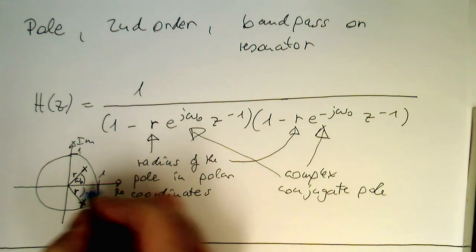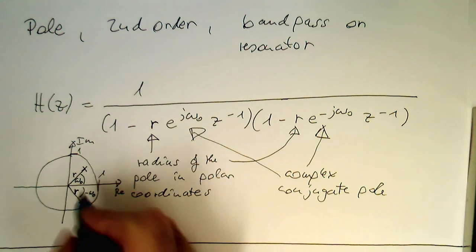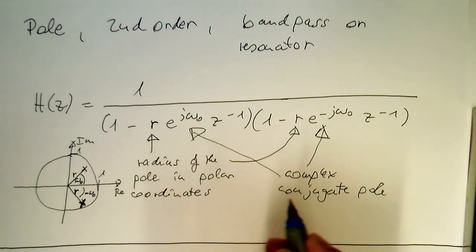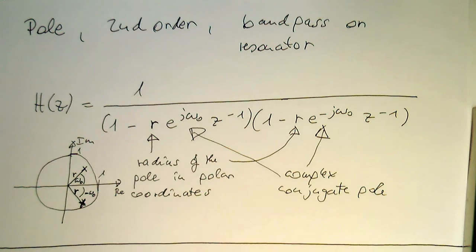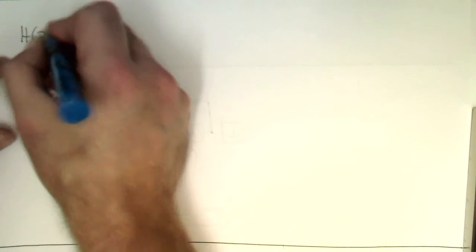And so now we've got here two parameters, in this case, so a radius here, and we have our angle omega zero here.